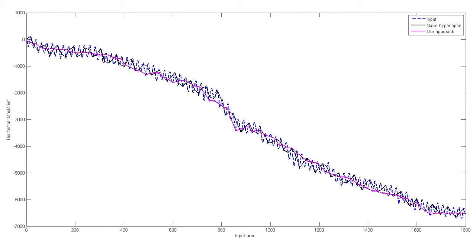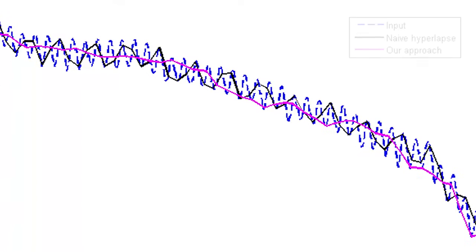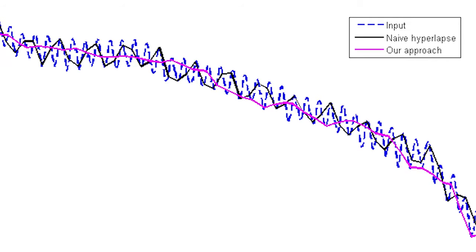We show the input camera X translation for the entire sequence, the naive frame selection, and our frame selection. Naive equally spaced frames cannot adapt to the natural jitter in the camera motion.